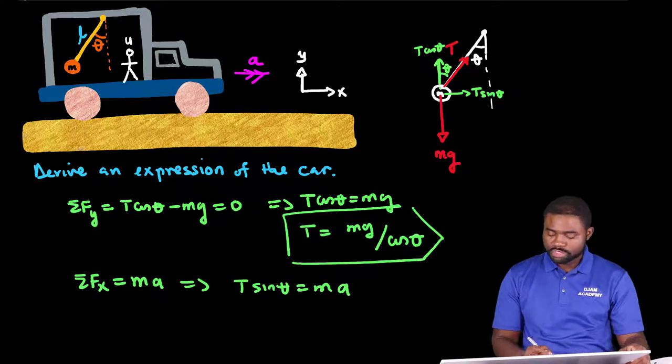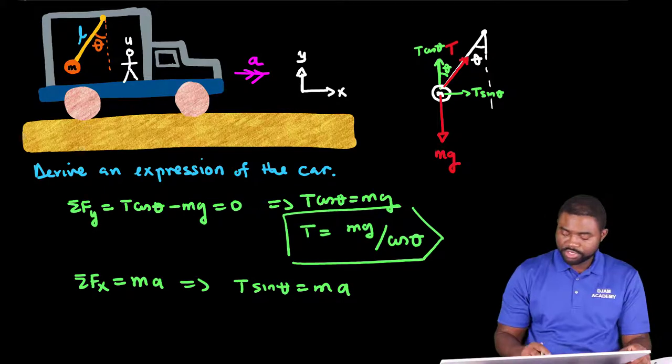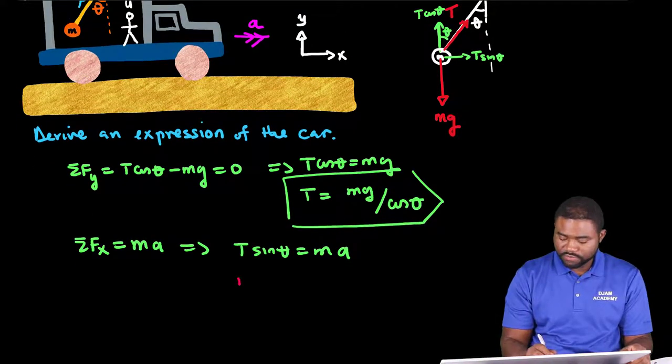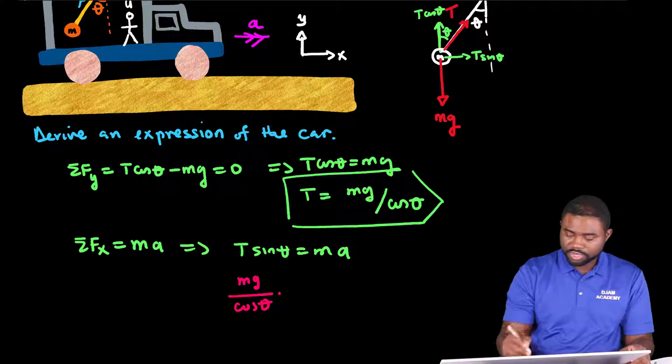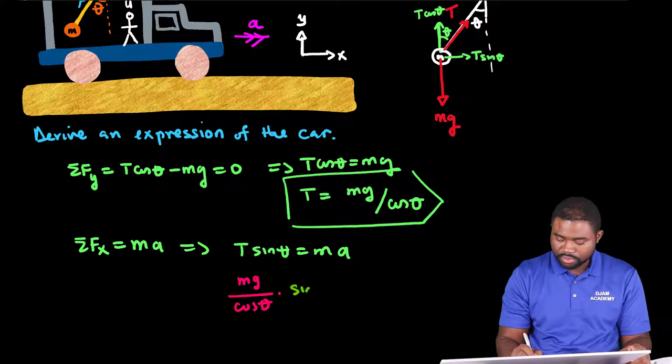But what is T? T is mg divided by cosine theta. And we are multiplying this by sine theta, all equal to ma.